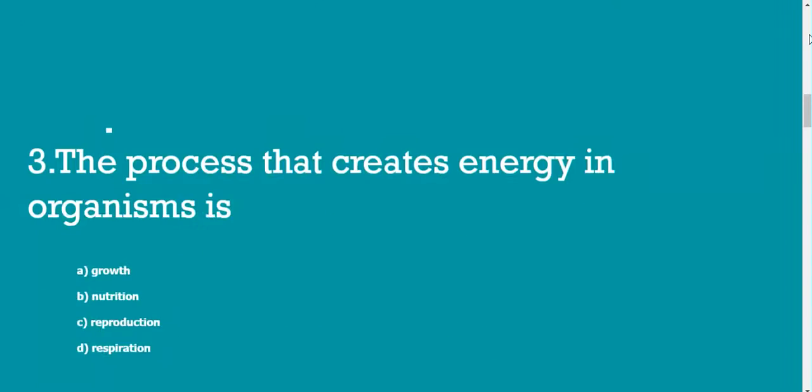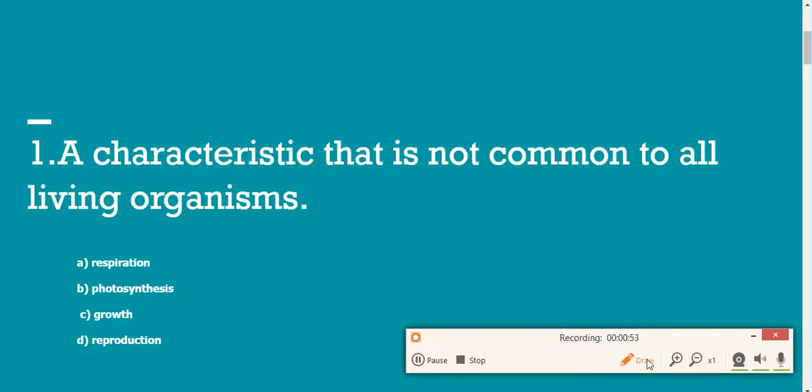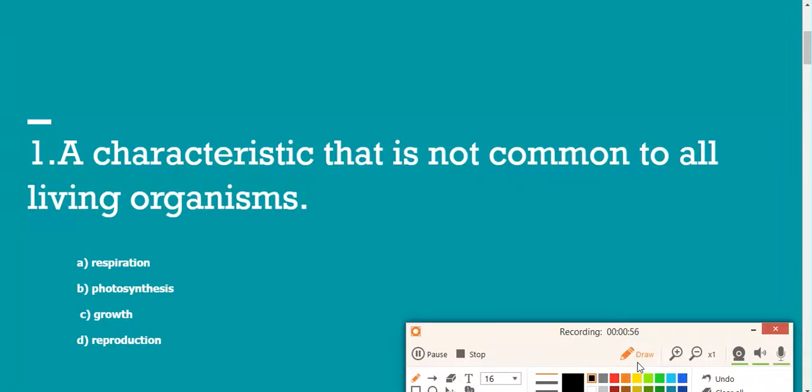Okay, let me get the first question for you. A characteristic that is not common to all living organisms. You have four options: respiration, photosynthesis, growth, and reproduction. What do you think is the answer? This should be really easy if you were listening to the lesson. We need to find a characteristic that is not common to all living organisms.